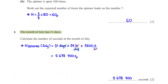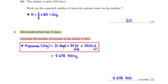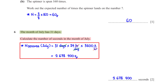The month of July has 31 days. Calculate the number of seconds in July. We multiply 31 days by 24 hours per day by 3600 seconds per hour. Typing this into the calculator gives 2,678,400 seconds.